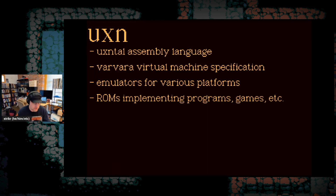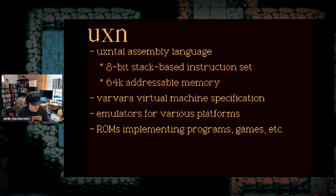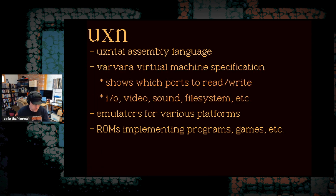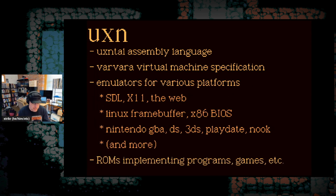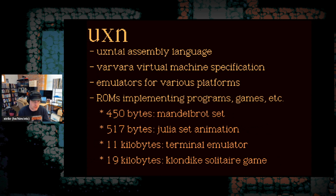UXN describes a small, mostly self-contained computing ecosystem consisting of the UXN Tal assembly language, the Varvara virtual machine specification, emulators for various platforms, and ROMs implementing programs, games, etc. — sort of like NES ROMs. The UXN Tal assembly language is an 8-bit stack-based instruction set with 64 kilobytes of addressable memory. The Varvara VM specification documents how to do I/O, draw to the screen, play sounds, etc. There are UXN emulators for many platforms such as SDL, X11, the web, Linux framebuffer, x86 BIOS, Nintendo handhelds, and a whole bunch more. ROMs implementing programs and games are pretty small — for example: 450 bytes for a Mandelbrot visualization, 517 bytes for an animated Julia set visualization, 11K for a terminal emulator, and 19K for a Klondike solitaire game.